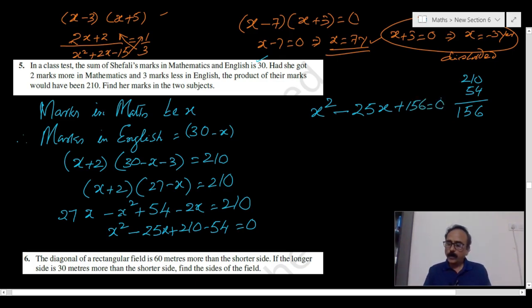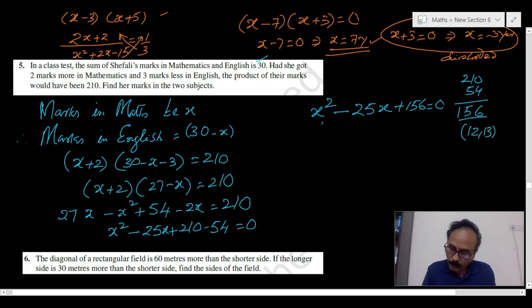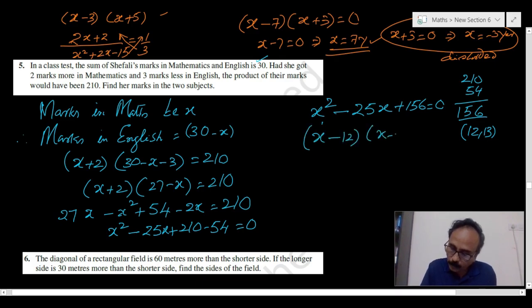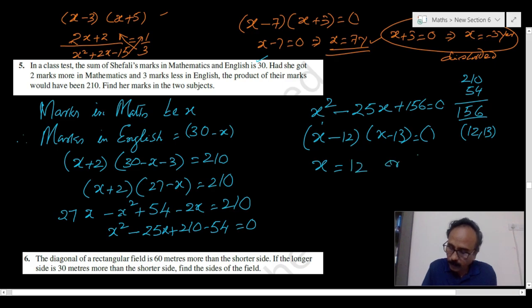We know that the factors of 156 are 12 and 13. This can be written as (x minus 12)(x minus 13) equals 0, so x equals 12 or x equals 13.